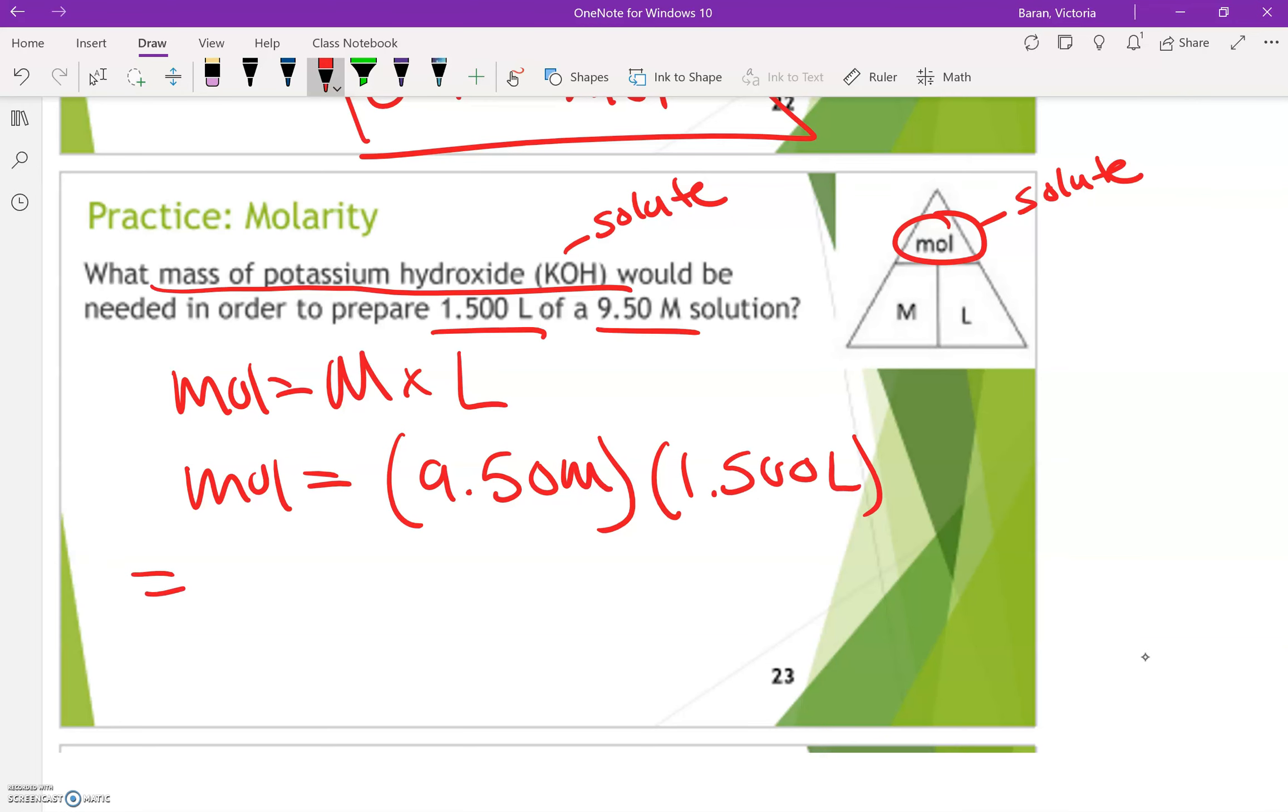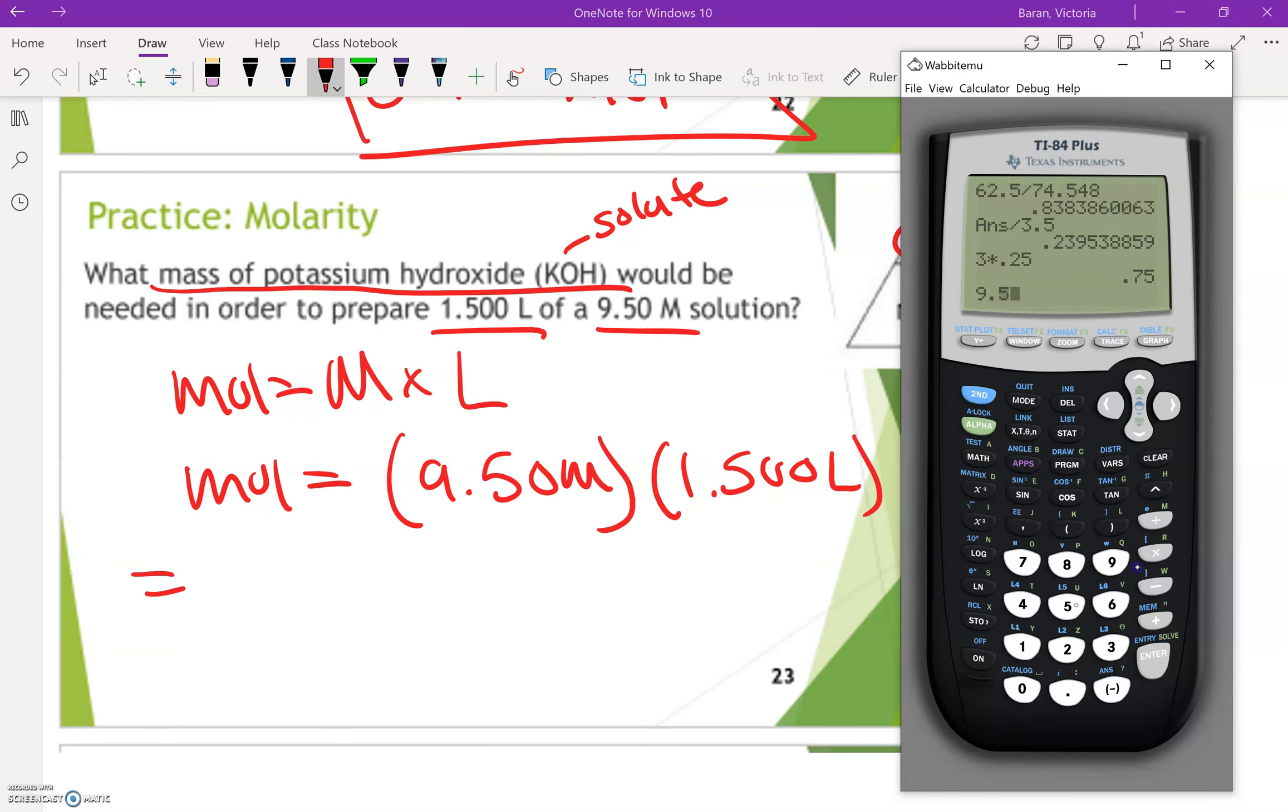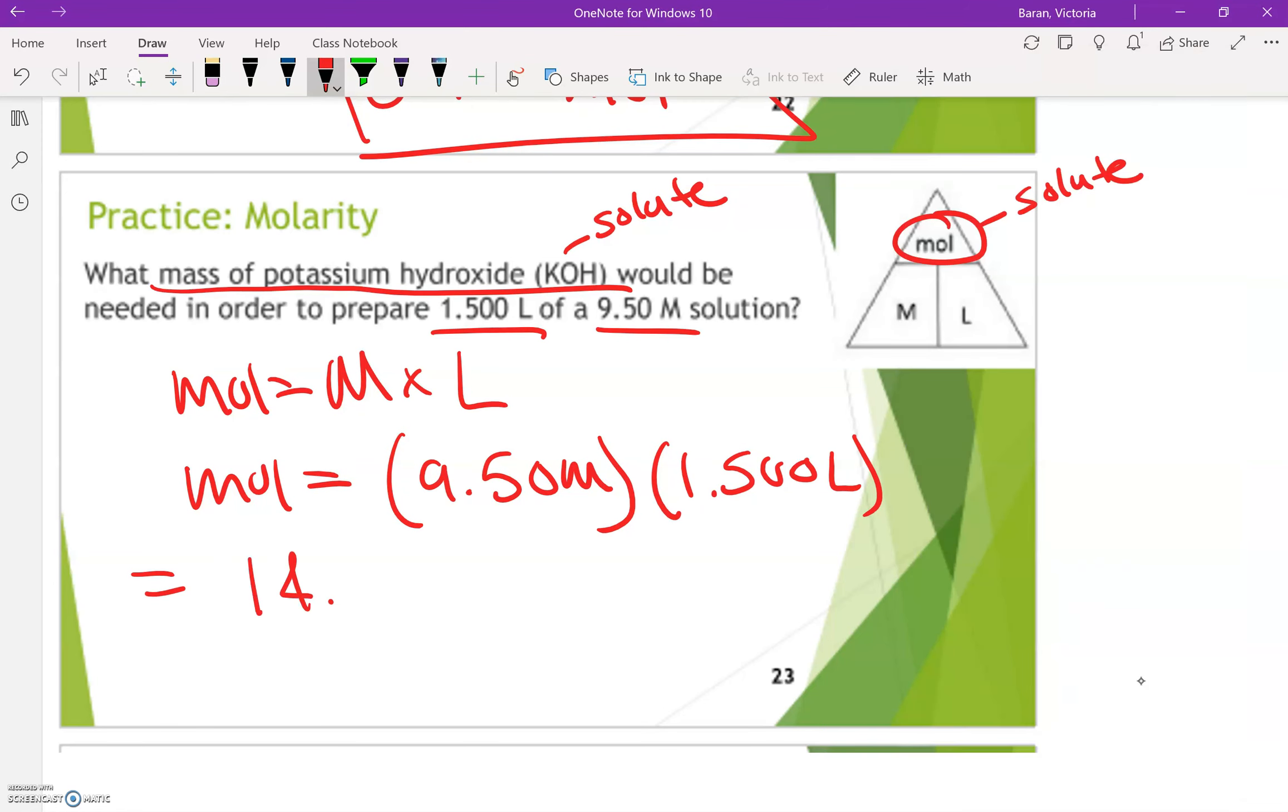So I'm going to go ahead and get that first. So 9.5 times 1.5 will give me 14.25 moles, but they want mass and mass is going to be in grams.